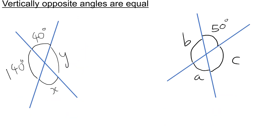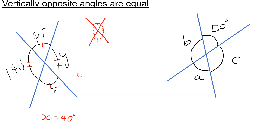Vertically opposite angles are equal. When you draw two straight lines crossing, you form two pairs of mutually equal angles. So here, if we look at the first example, X and 40 are opposite, so X equals 40 degrees. And Y and 140 are opposite, so Y is equal to 140 degrees.